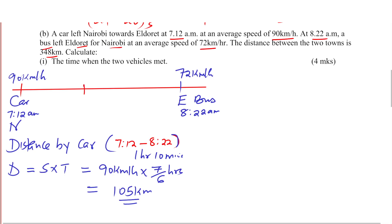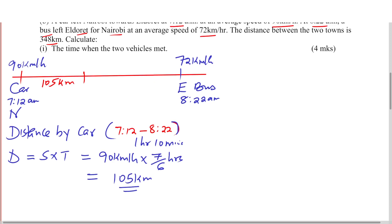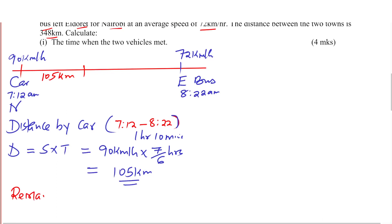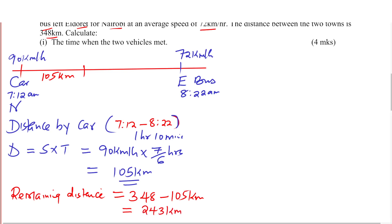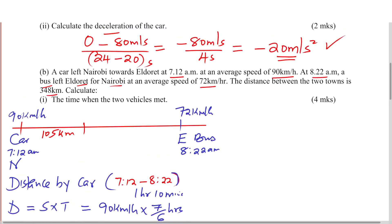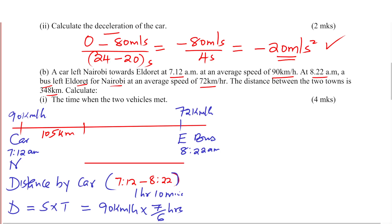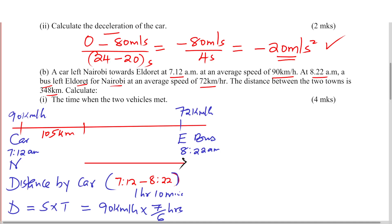We indicate that the car had covered 105 kilometers. The remaining distance is 348 minus 105, which gives 243 kilometers. This 243 kilometers is the distance between the car's position when the bus departed and Eldoret.